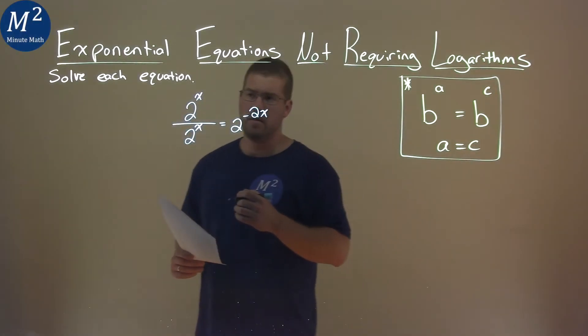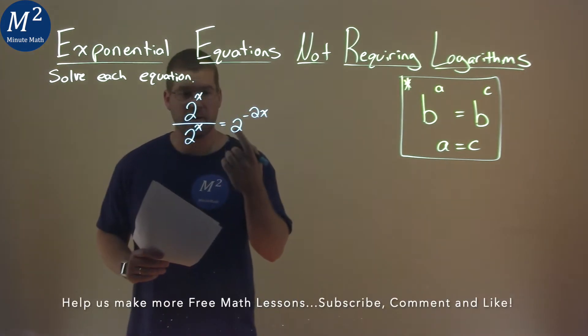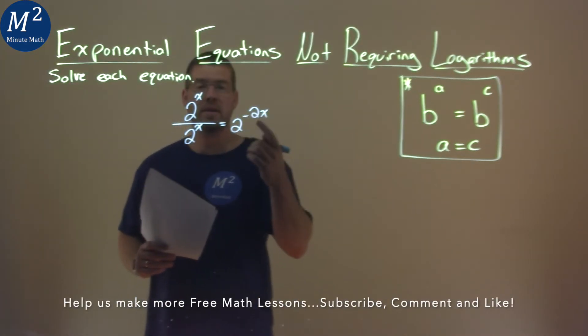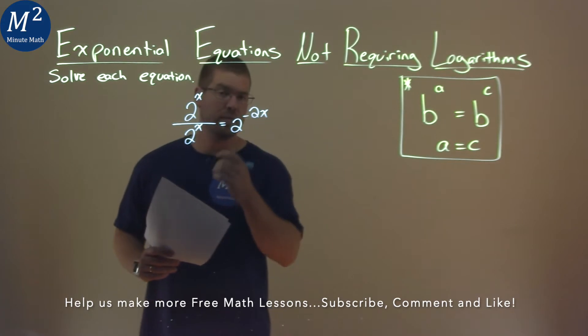We're given this problem right here: 2 to the x power divided by 2 to the x power, and that's equal to 2 to the negative 2x power, and we have to solve this equation.